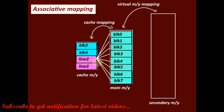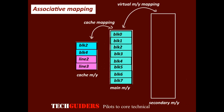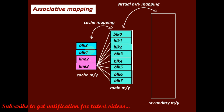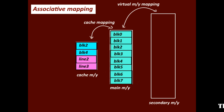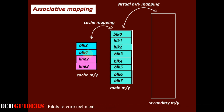In a single cache line, all the main memory blocks are actually mapped to it. Hence, if it is occupied, to identify which main memory block is residing on that particular cache line, each cache line will be associated with a tag.